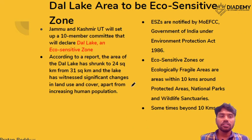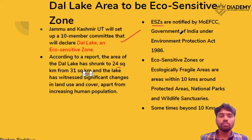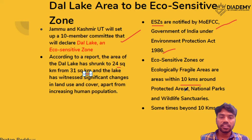Dal Lake has been in the news due to shrinkage of its area from 31 square kilometers to approximately 24 square kilometers. The Union Territory of Jammu & Kashmir has set up a 10-member committee to decide whether to declare it an Eco-Sensitive Zone. Eco-Sensitive Zones are notified by the Ministry of Environment and Climate Change under the Environment Protection Act, 1986. They are generally declared within 10 kilometers around protected areas, national parks, and sanctuaries, though this can extend beyond 10 km based on ecological significance.